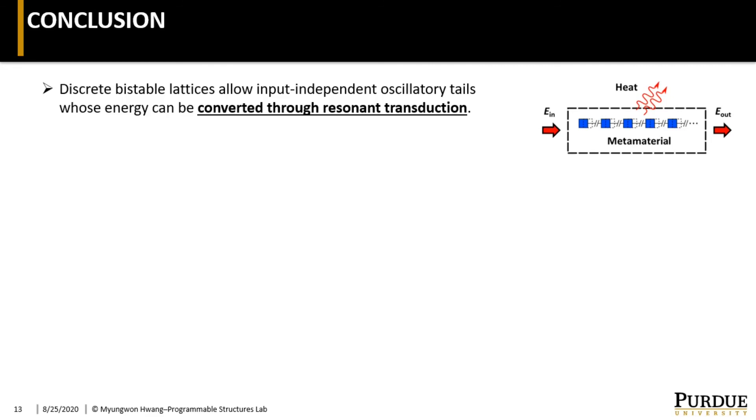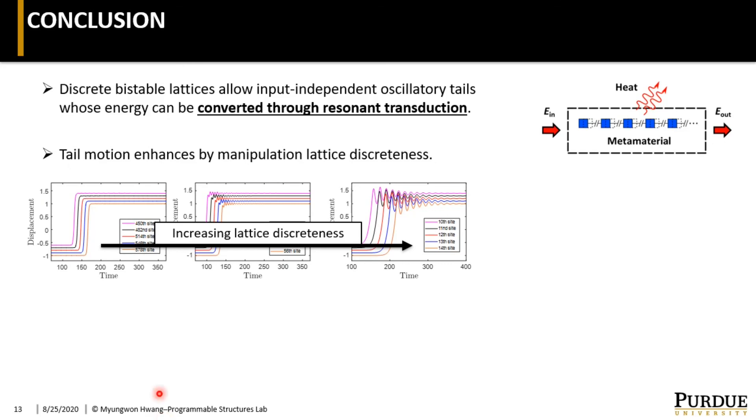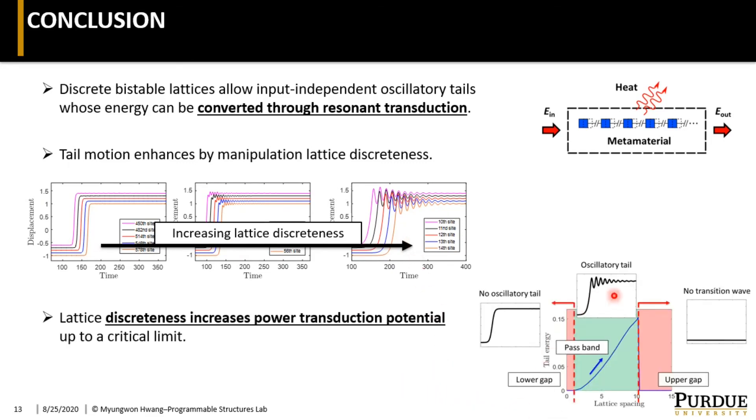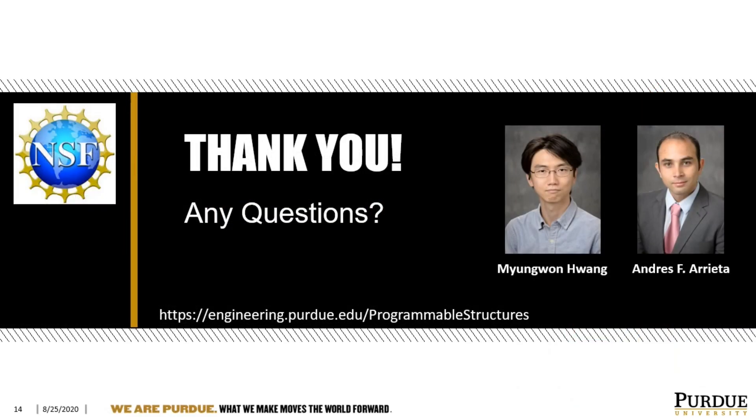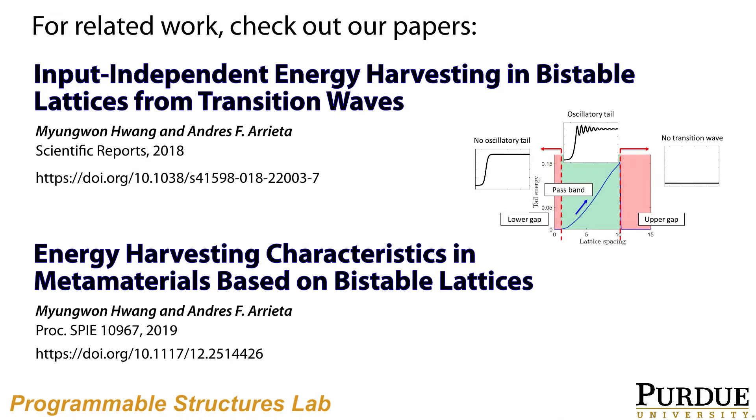To sum up this presentation, we have observed that discrete bistable lattice generates the transducible tail whose energy can be efficiently harvested. And then we showed that we can enhance such tail motion by manipulating the lattice discreteness. We also obtained the transduction potential curve that shows the feasibility of the energy conversion potential in this type of lattice. That concludes my presentation. Thank you very much for your attention.